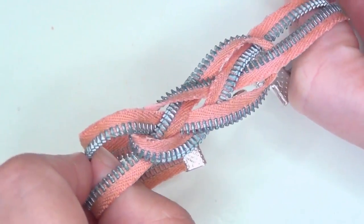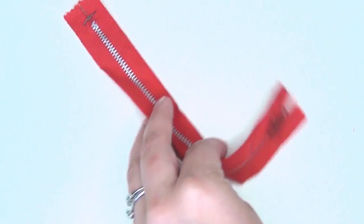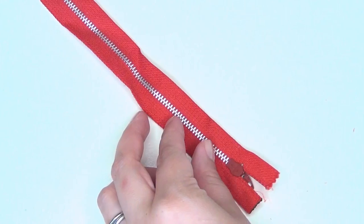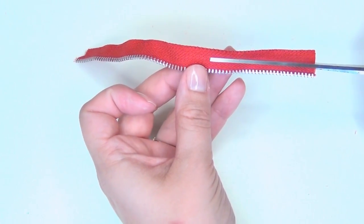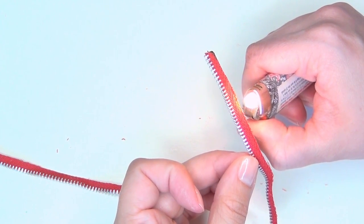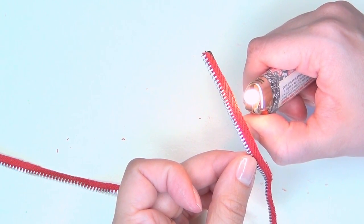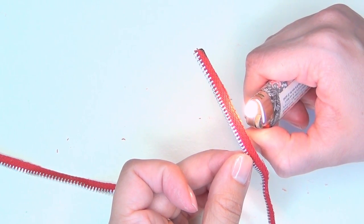To make the second style of bracelet in this video you're going to go through almost the exact same steps except you're going to be using two zippers. Cut off the ends of your zippers then trim away the excess fabric the exact same way, and for this one since I'm using a polyester zipper I am able to use a lighter.